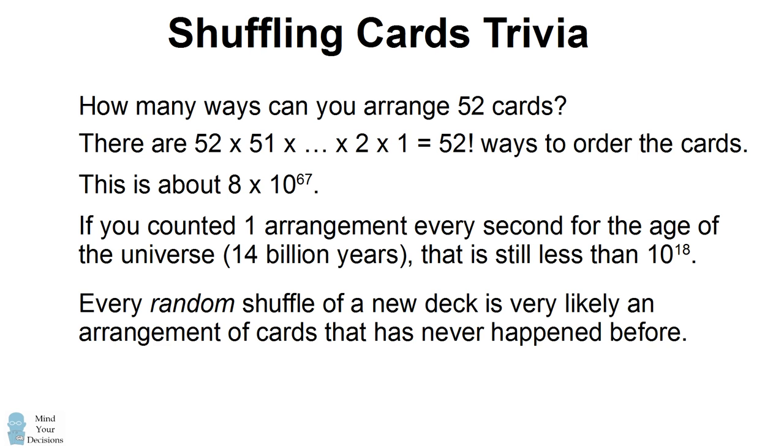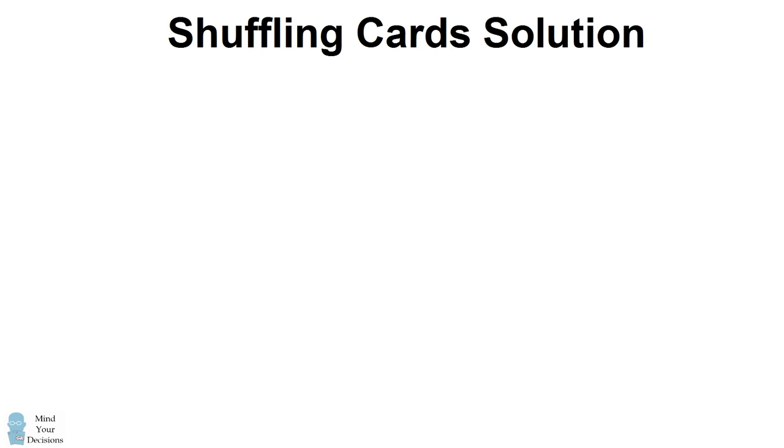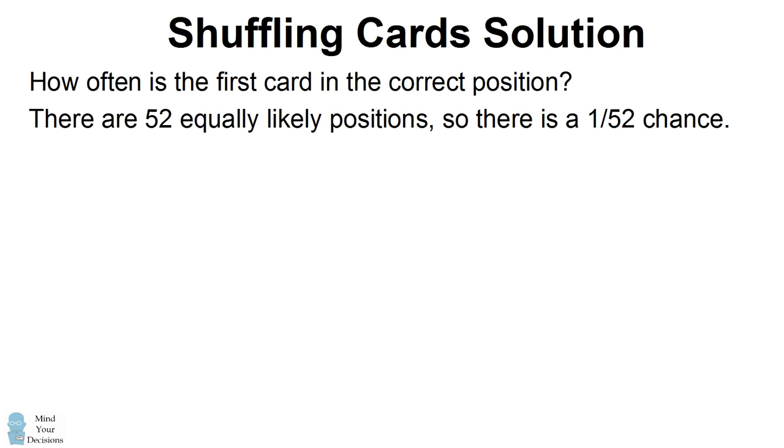So now let's try and solve the problem. We'll first ask, how often is the first card going to remain in the same position? I'll call this the correct position. Well, the first card is equally likely to be in any of the 52 spots in the deck. So there is a 1 in 52 chance that the first card will be in the first spot.